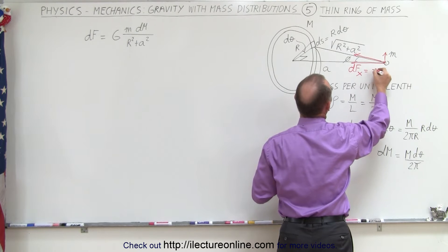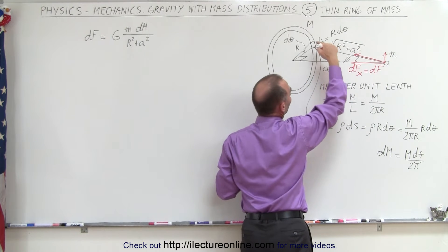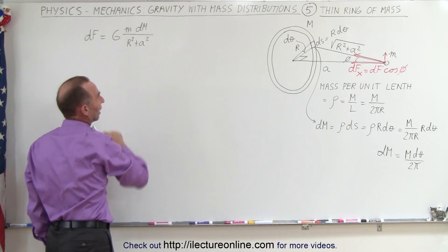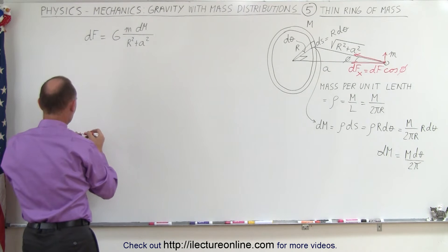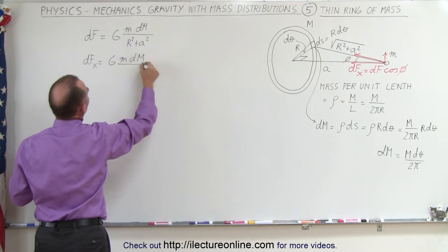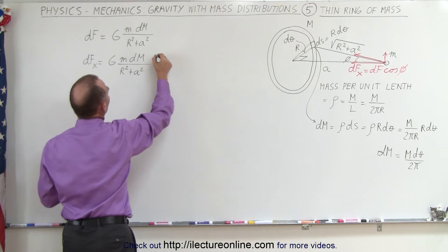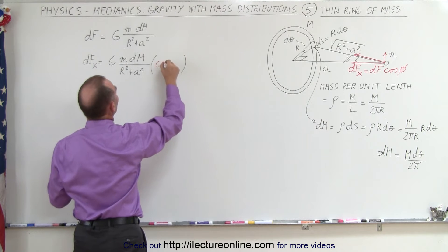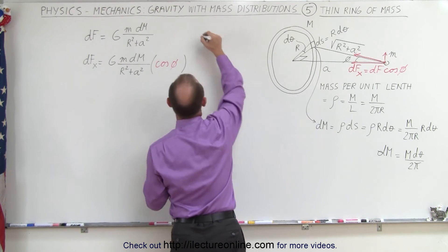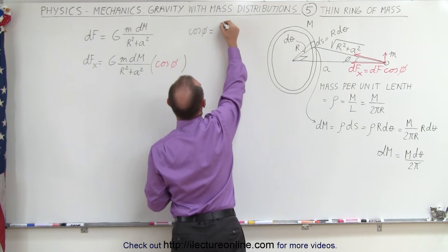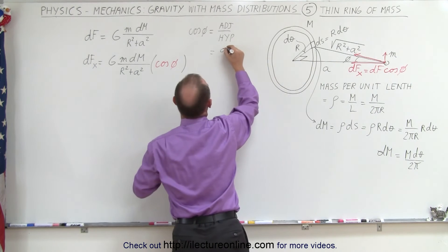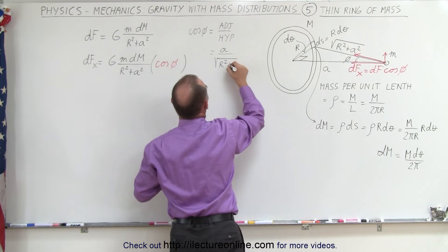The small amount of force dfₓ in the x direction is equal to the small amount of force df times the cosine of angle phi. So instead of looking for df, we actually want df in the x direction only. By definition, cosine of phi equals the adjacent side divided by the hypotenuse. The adjacent side is the distance a, and the hypotenuse is the square root of r squared plus a squared.